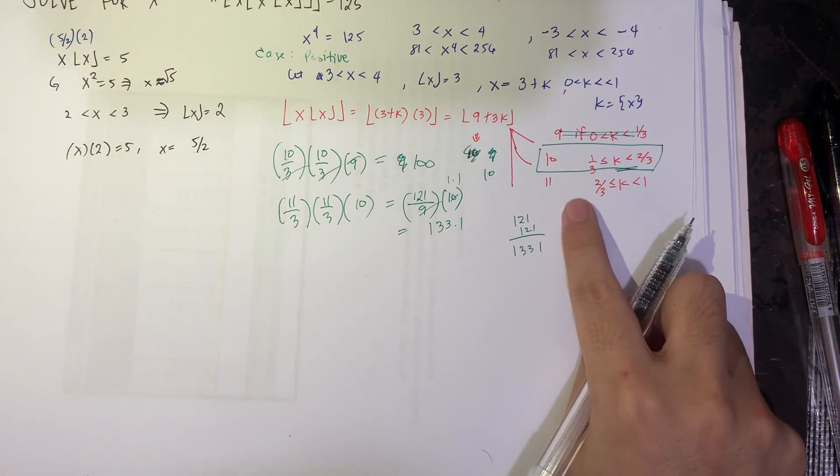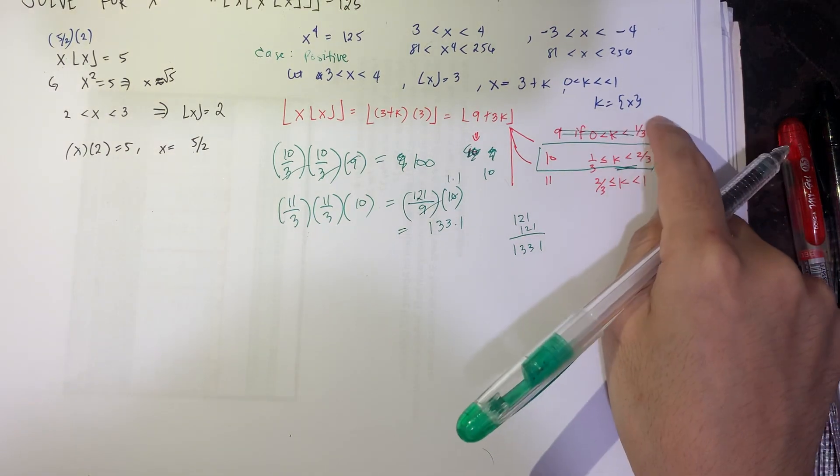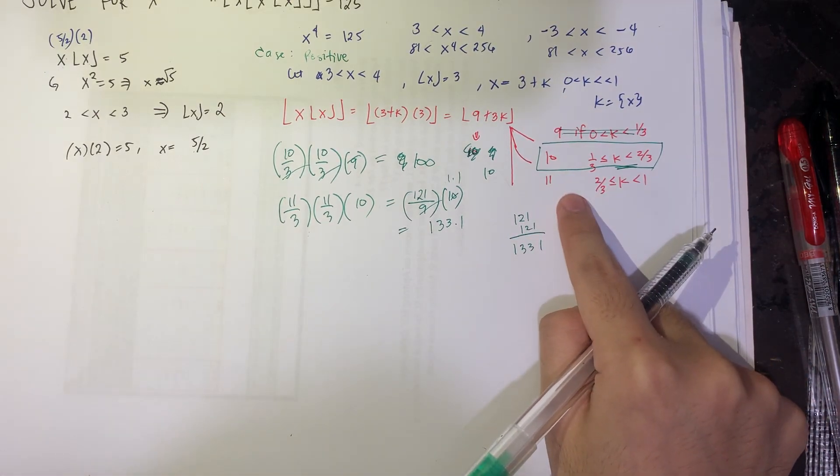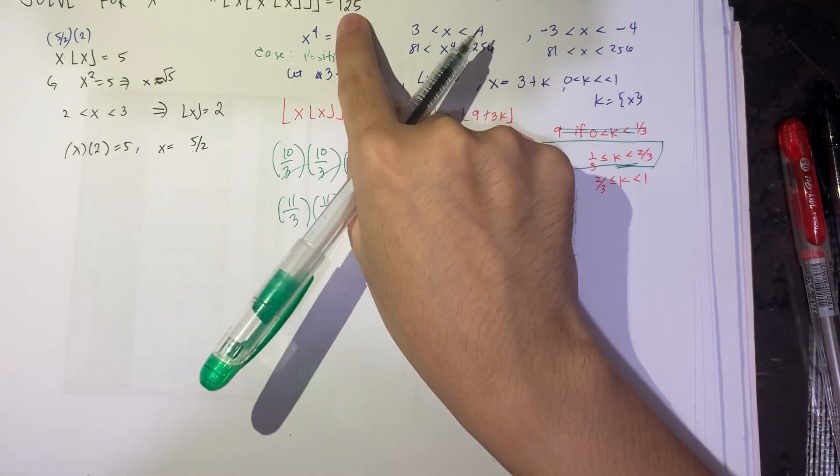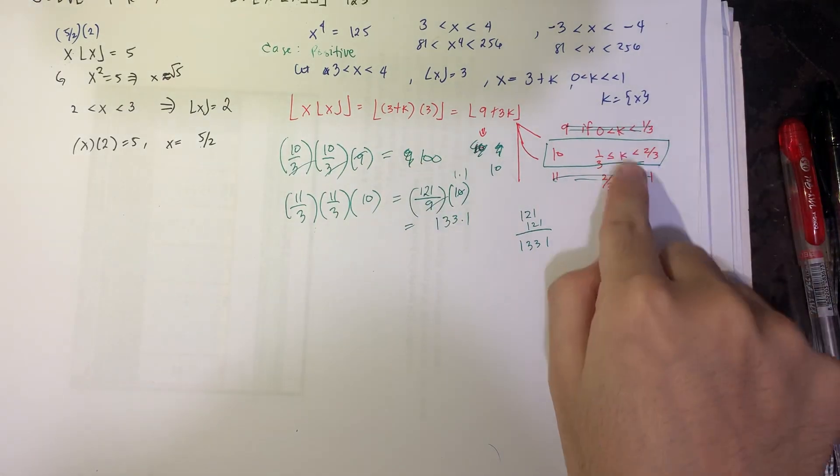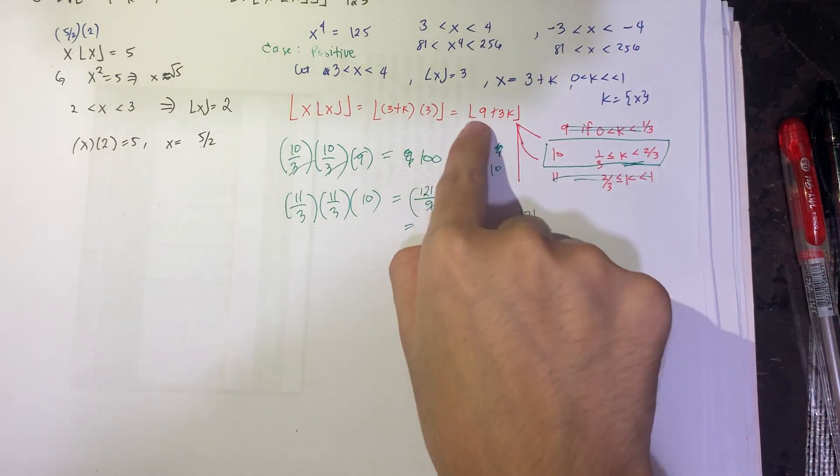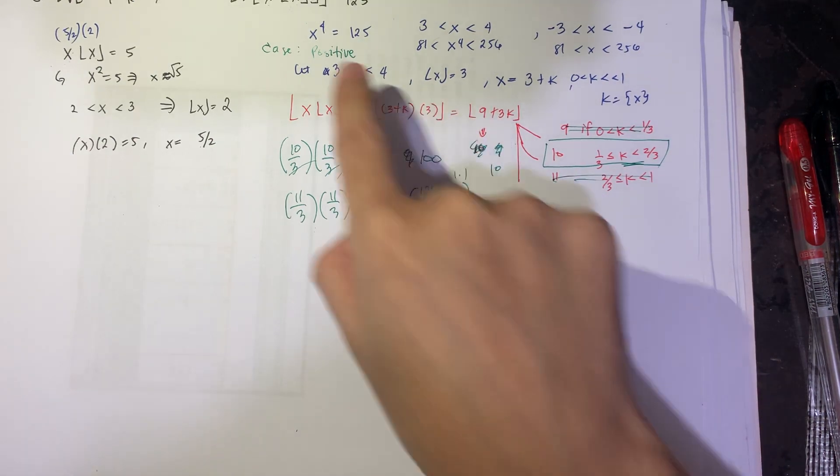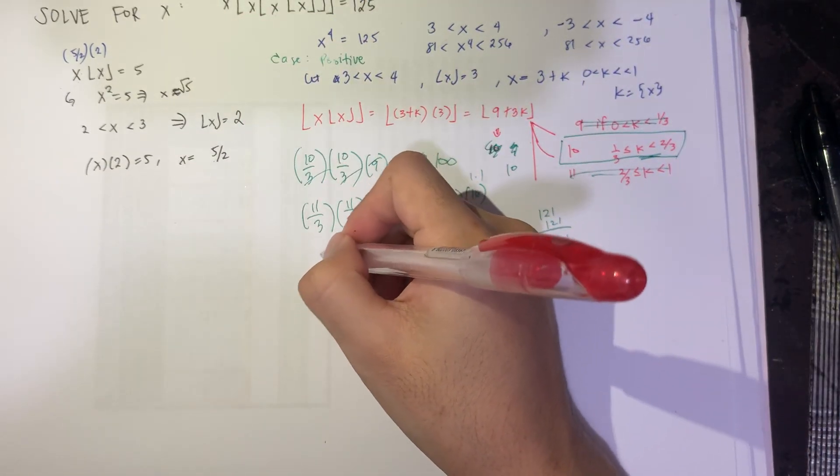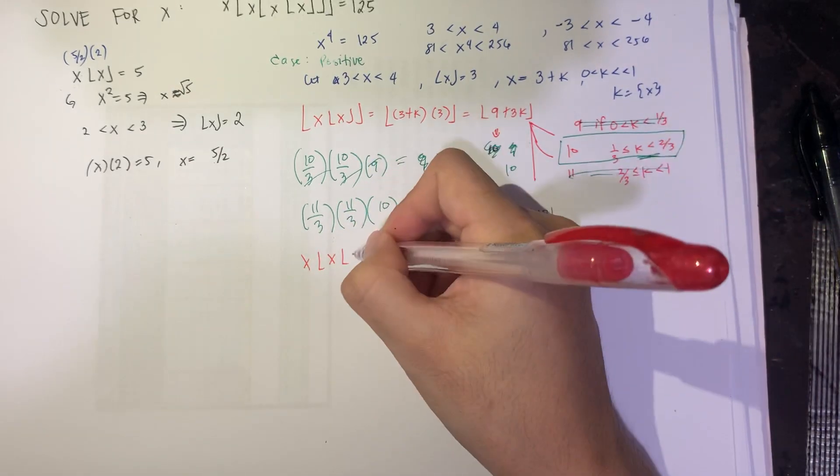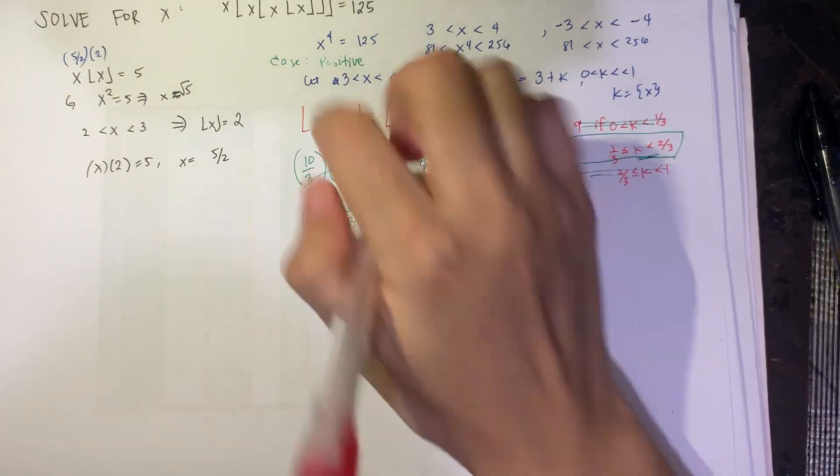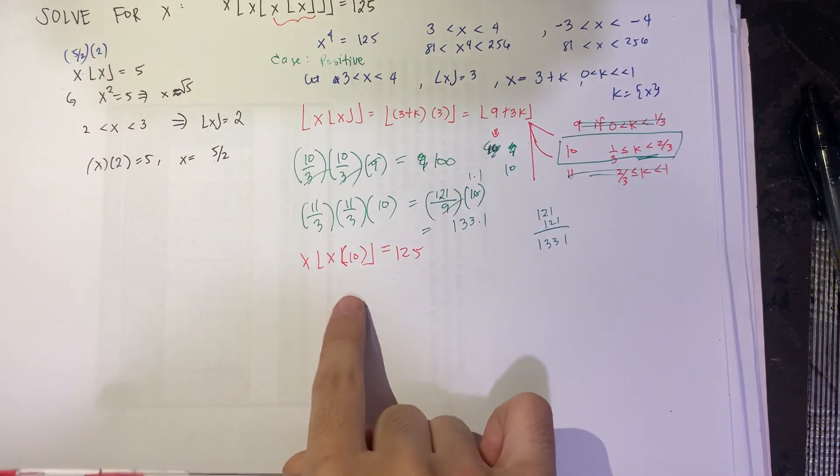Do we have to check for this one? No. Because if this is 133, then this is at least 133. In this case, we'll give you at least 133, which is obviously greater than this one. So this will not give you what you want. So therefore, your k is between 1 thirds and 2 thirds and this value here is equal to 10. So simplifying that, that becomes x times floor x times, well, this becomes 10 now, 10 is equal to 125. So this case here simplifies to 10.